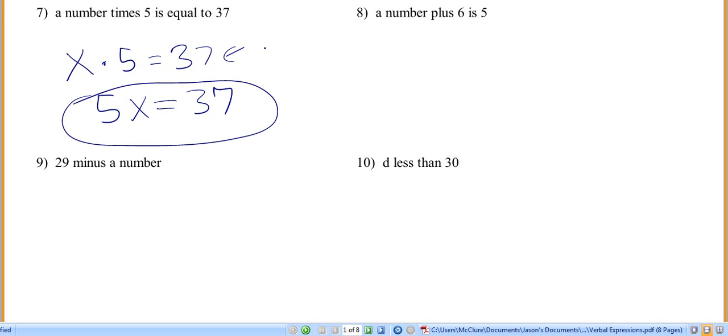A B or C student may write it this way. An F student wouldn't even try it at all. A number plus. Just means add, 6 is 5. So you've got x plus 6 is 5.